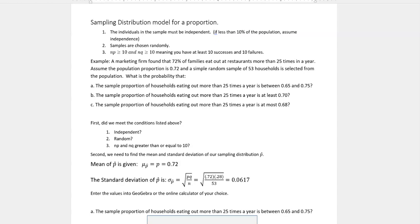What's the probability that: a) the sample proportion of households eating out more than 25 times a year is between 0.65 and 0.75, b) the sample proportion is at least 0.70, and c) the sample proportion is at most 0.68?